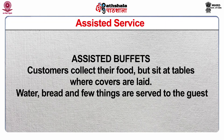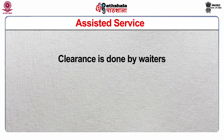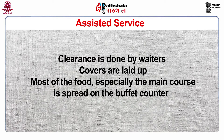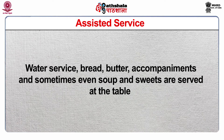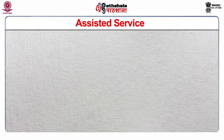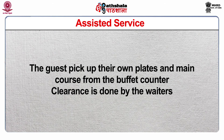Number B is assisted buffet. Customers collect their food but sit at tables where covers are laid; water, bread, and a few things are served to the guest, and clearance is done by the waiter. In this service, covers are laid up. Most of the food, especially the main course, is spread on the buffet counter. Water service, bread, butter, accompaniments, and sometimes soup and sweets are served at the table. The guests pick up their own plates and main course from the buffet counter, and clearance is done by the waiters.